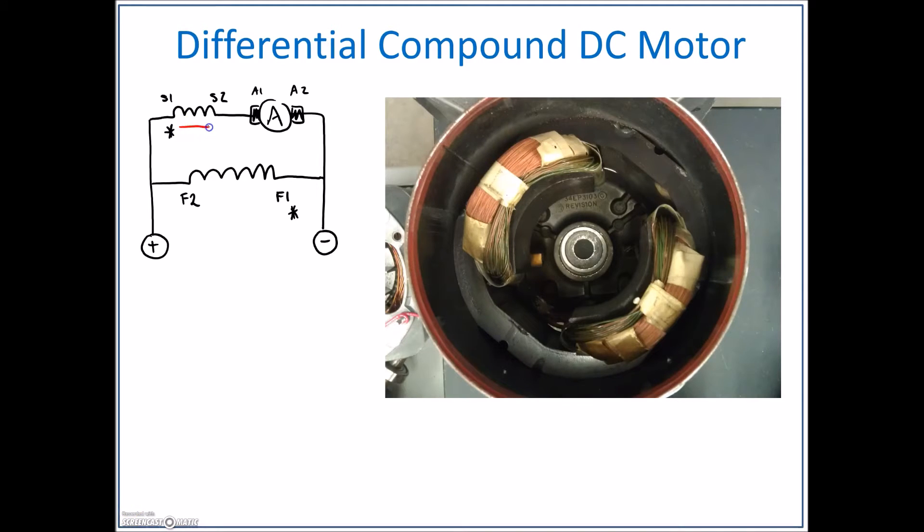If those two magnetic fields are going in opposite directions, then one is going to cancel the other one out, and that's why the name of this connection is the differential compound DC motor. This is not a connection that we're looking for whatsoever.